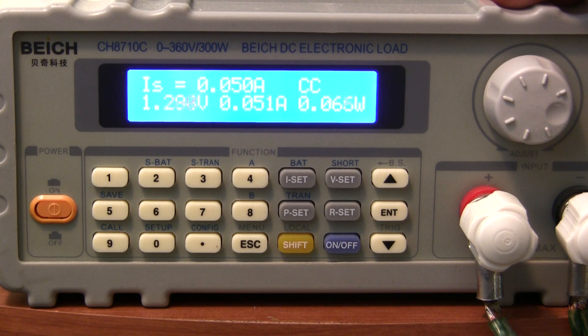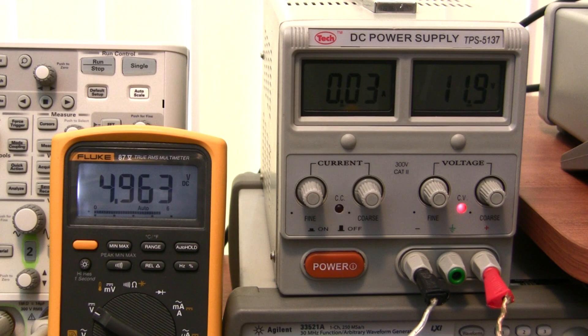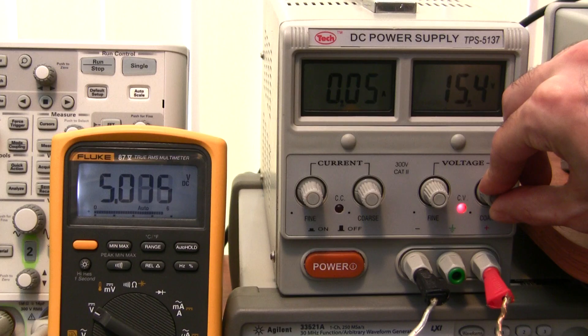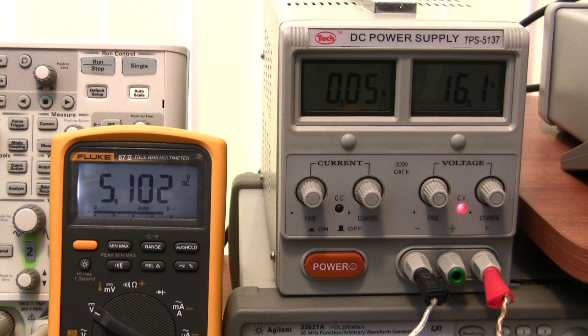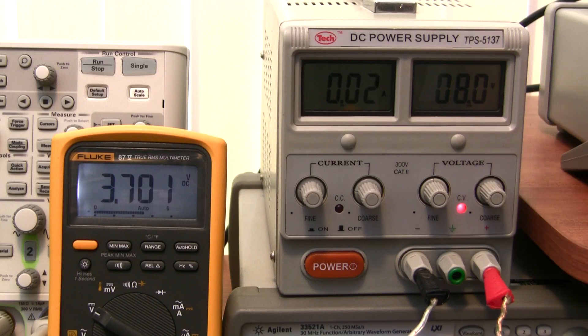Let's go back to a 20 milliamp load, and I want to show you how the input voltage also changes things. On the right we've got my power supply's input voltage going into the Zener diode regulator, and on the left my multimeter is showing you the supposedly regulated 5.1 volt output. If I change the input from 12 volts to 16 volts, the output changes quite a bit. And going from 16 volts down to 8 volts, this regulator is useless.